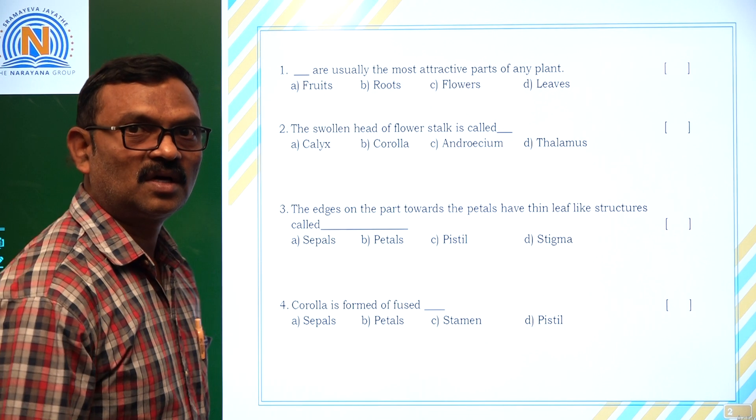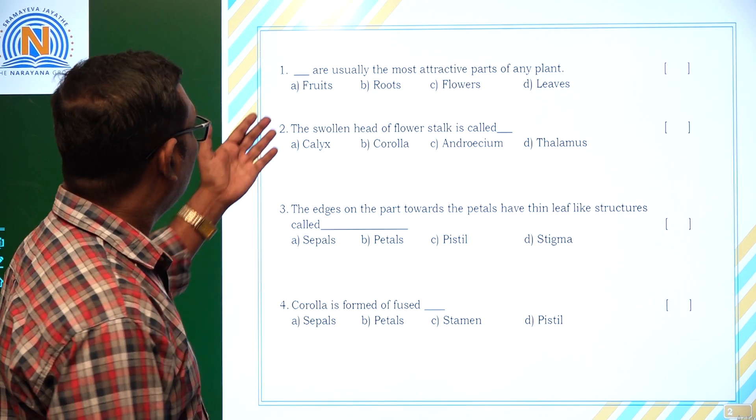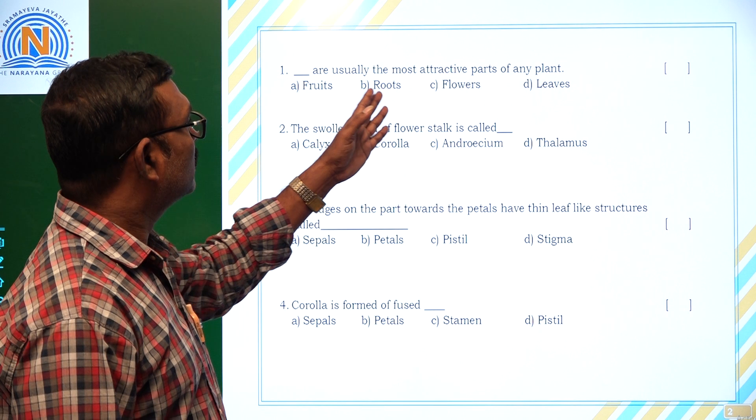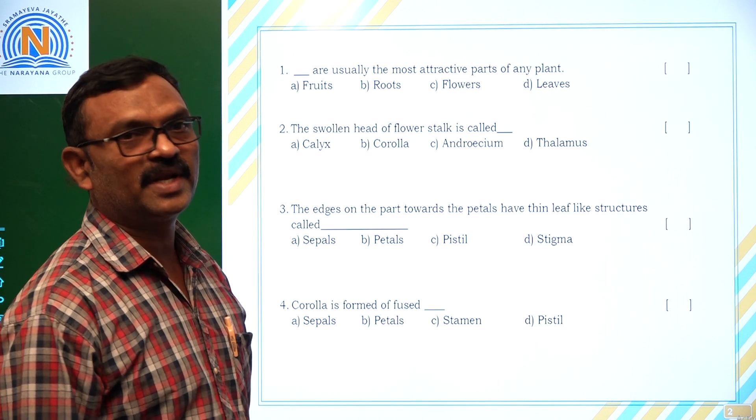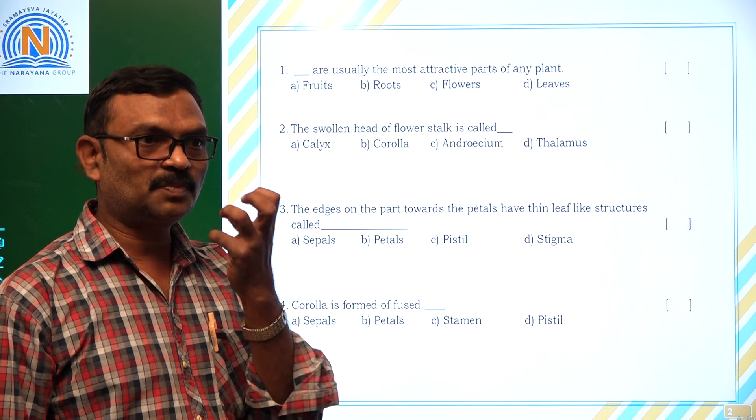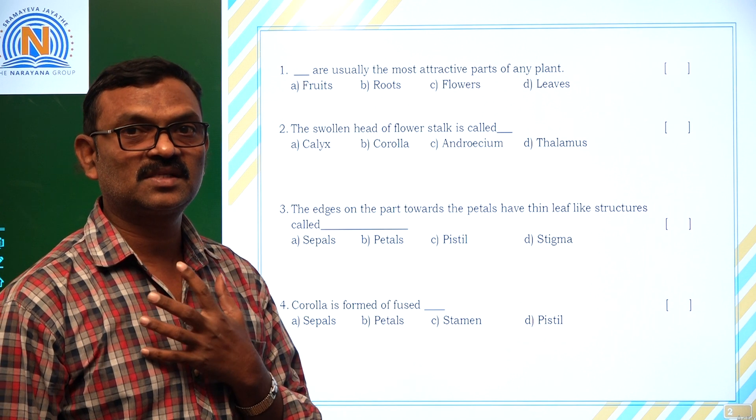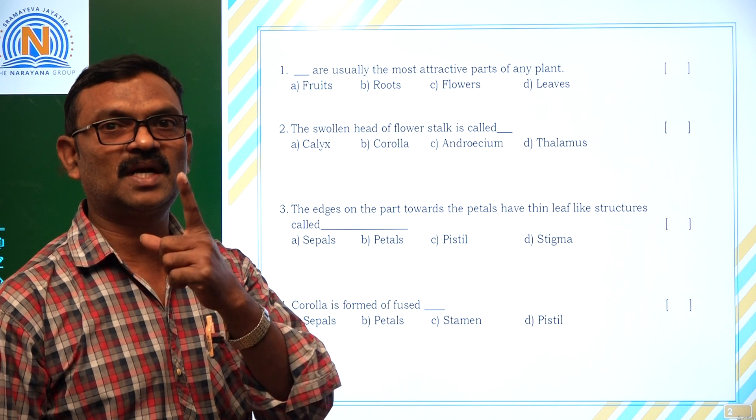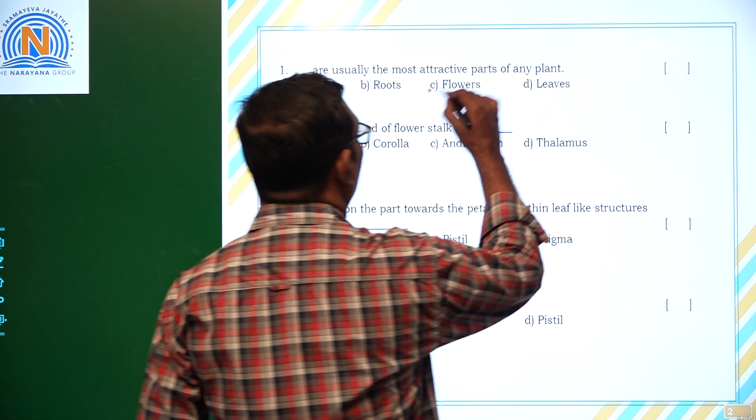The first choose the correct answer is: dash are usually the most attractive parts of any plant. So which part? Mostly attractors towards the plant means that is nothing but flower. So option C.